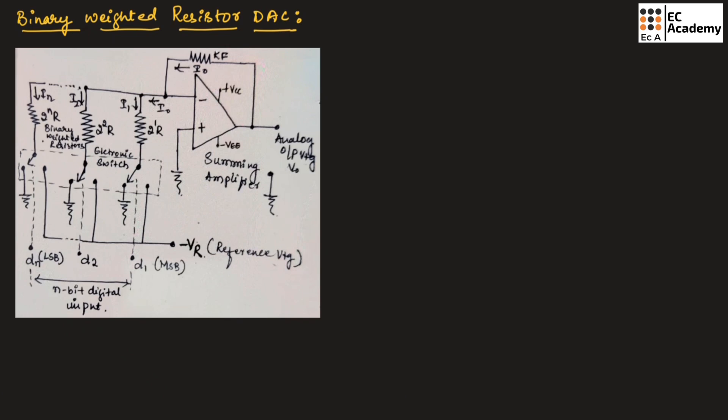There are few cases where we will be converting a digital signal into analog signal, and there are few cases where we will be converting the analog signal into digital signal. There are two types of data converters. The first one is digital to analog converter, which is DAC, and analog to digital converter, which is generally known as ADC. Here, we are looking at a digital to analog converter.